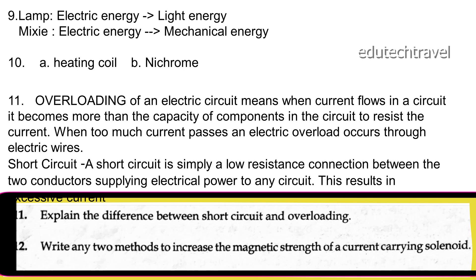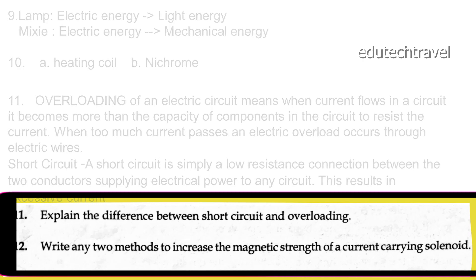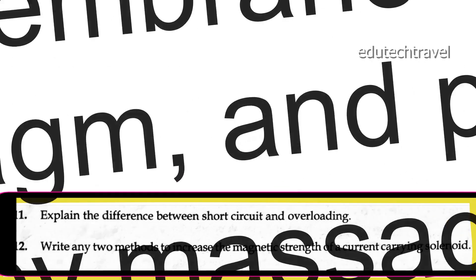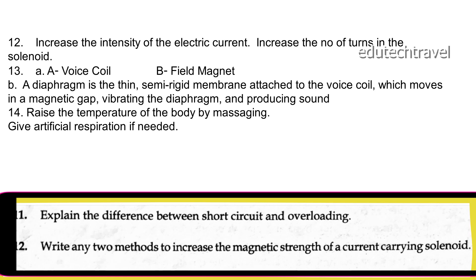Explain the difference between short circuit and overloading. Overloading occurs when current flows in the circuit and becomes more than the capacity of components to resist it. A short circuit is a low resistance connection between two conductors supplying electric power to a circuit, resulting in excessive current. Example: phase and neutral.